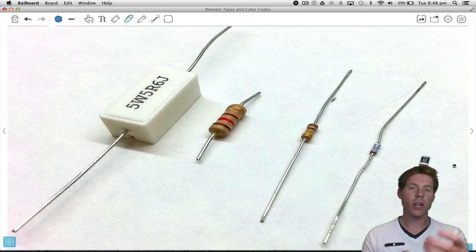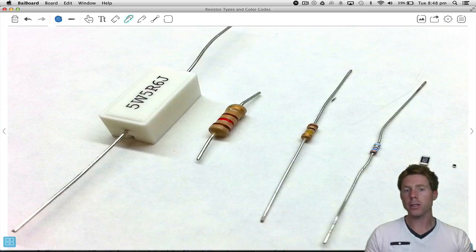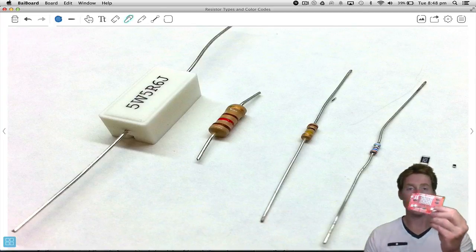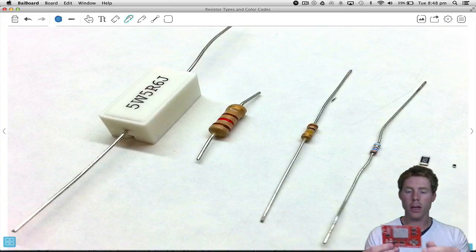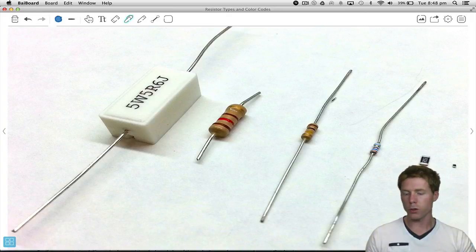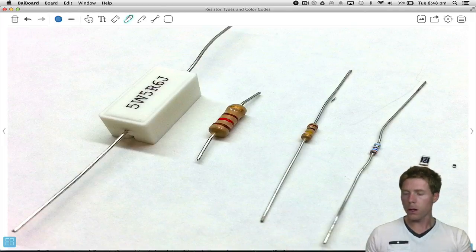So these different types of resistors, they certainly have their place. When I was prototyping this, I just used the through-hole components with the legs, and then when I went to the production, it was surface mount.